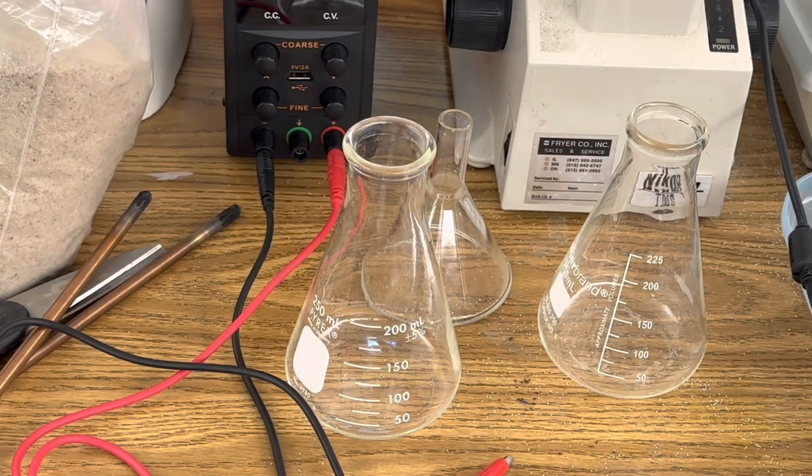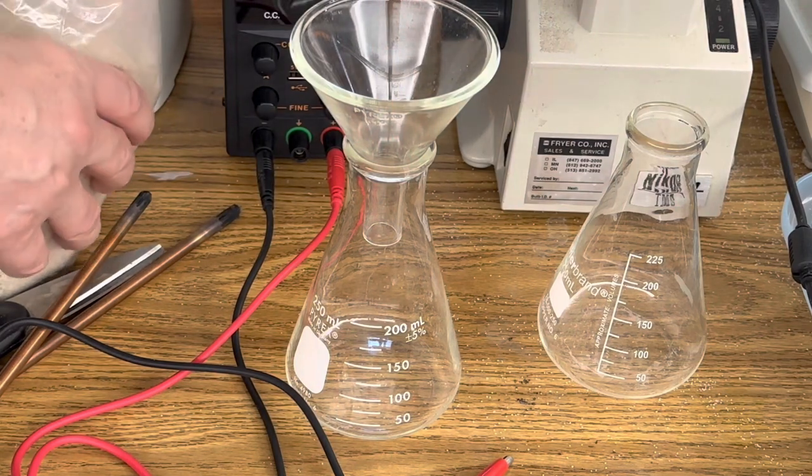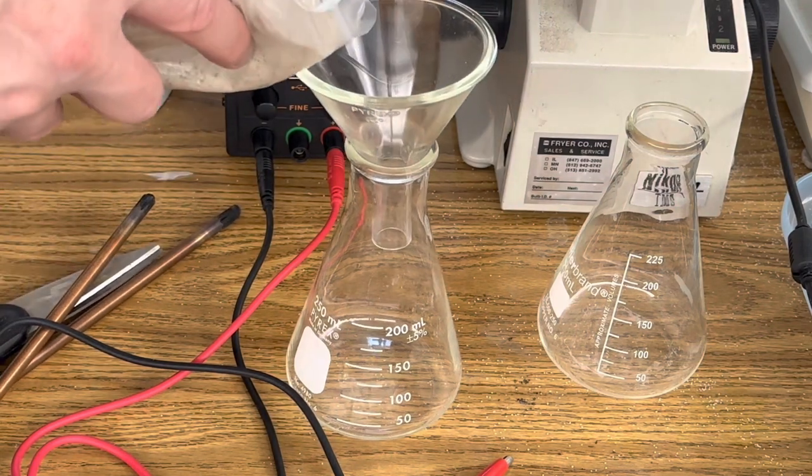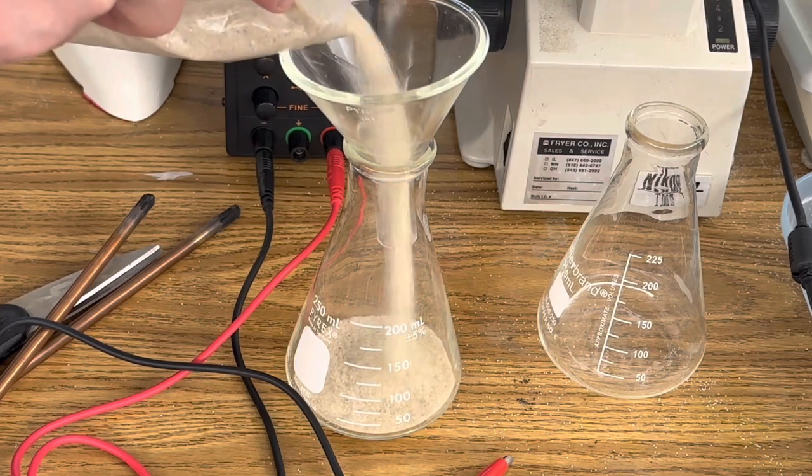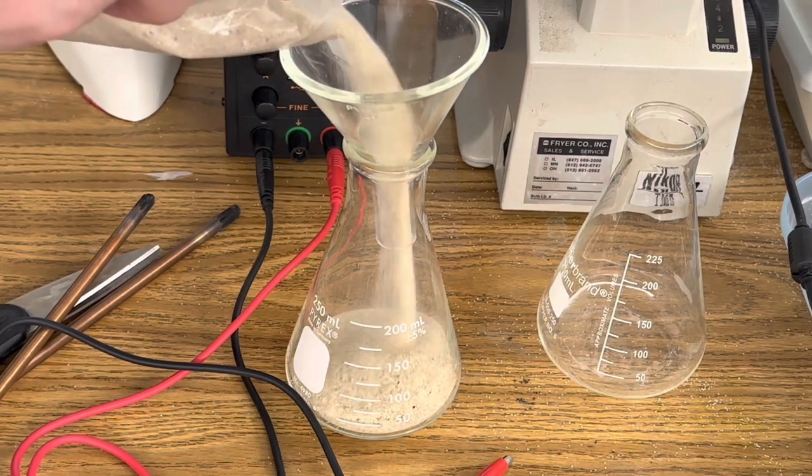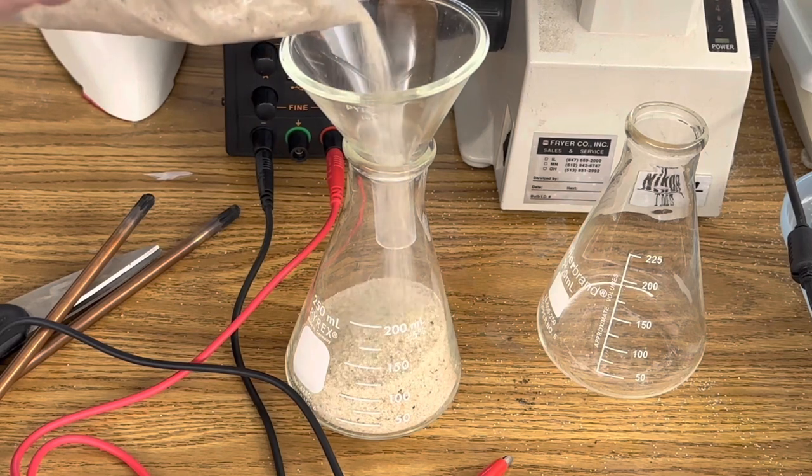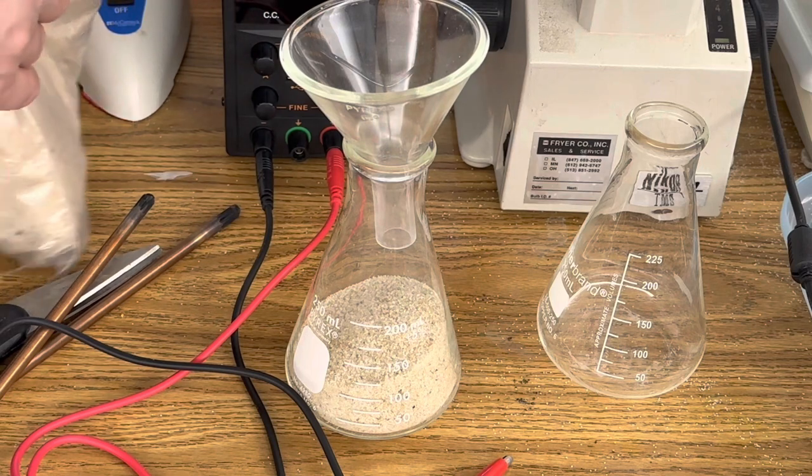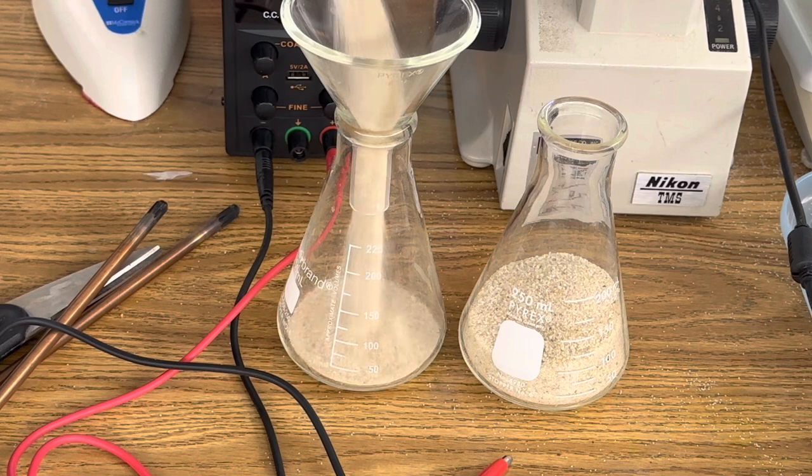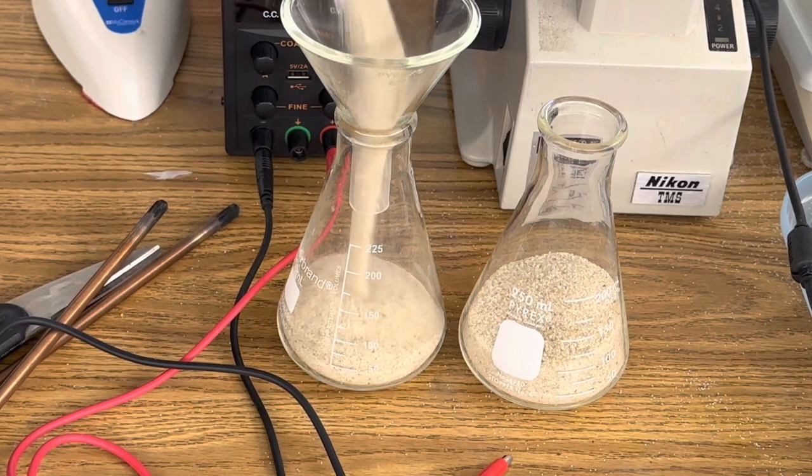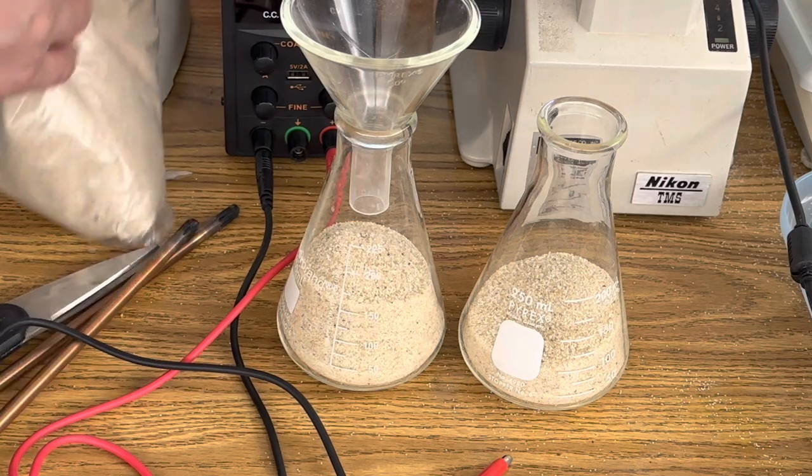Okay, so in order to hold the carbon rods in place, I was thinking to put a little bit of sand in each of my Erlenmeyer flasks. Just enough sand so when I put the carbon rod, I can kind of stick it in the sand at an angle and it'll hold in place. So I think that's probably enough sand. And now I'm just doing the same thing as the second flask, just adding a little bit of sand to give that carbon rod some tension.